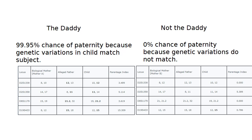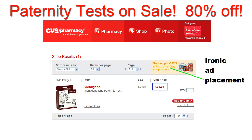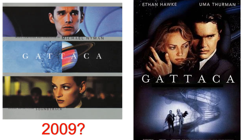The math is surprisingly straightforward. The probability is the product — that's multiplication, by the way — of all the parentage index values for each locus, or individual site. The cost of a test is $149 from Identigene, and you can buy it at your local CVS for much less. The results come in 3 to 5 days and are 99.99% accurate. How close is that to the movie world of Gattaca?